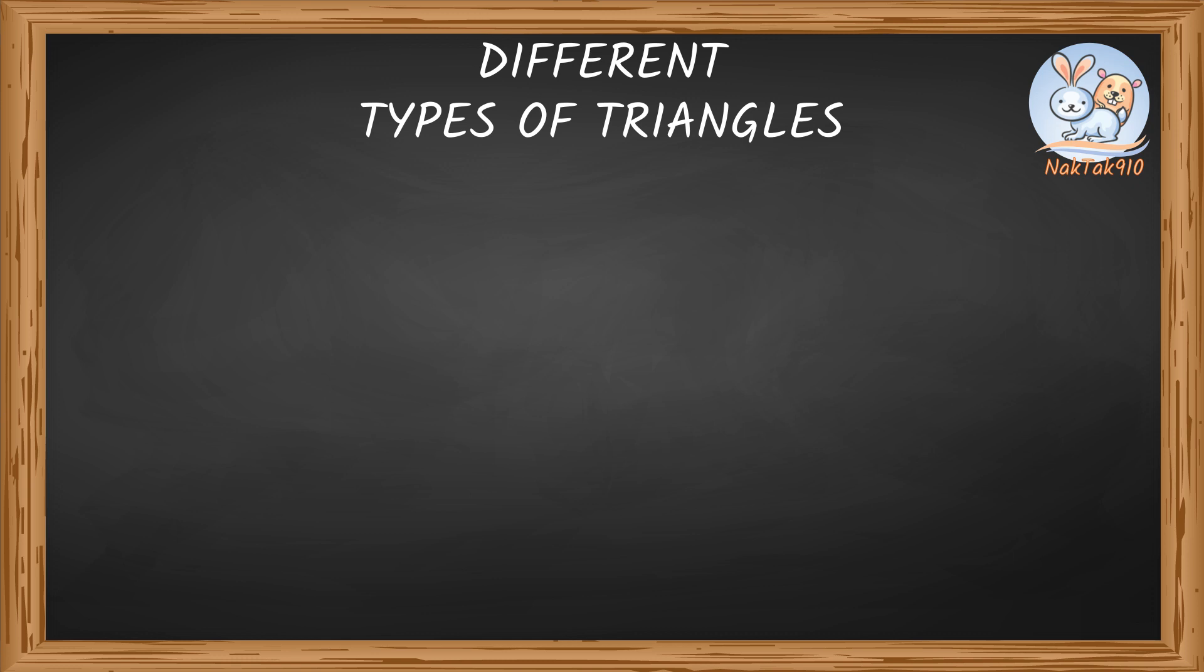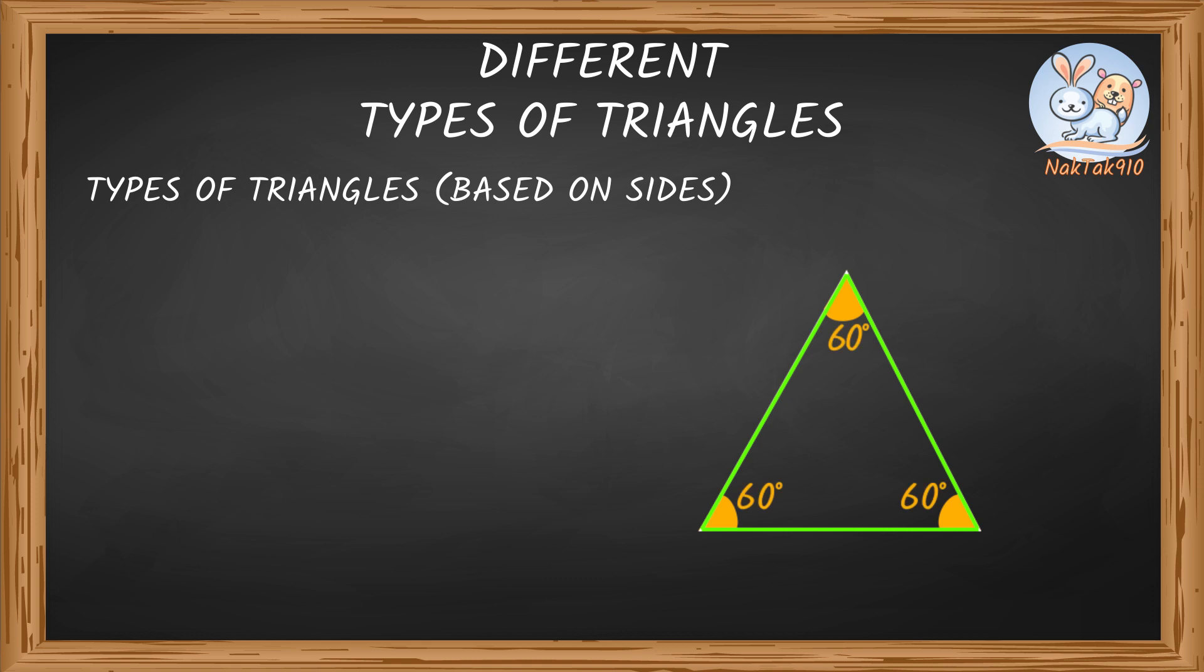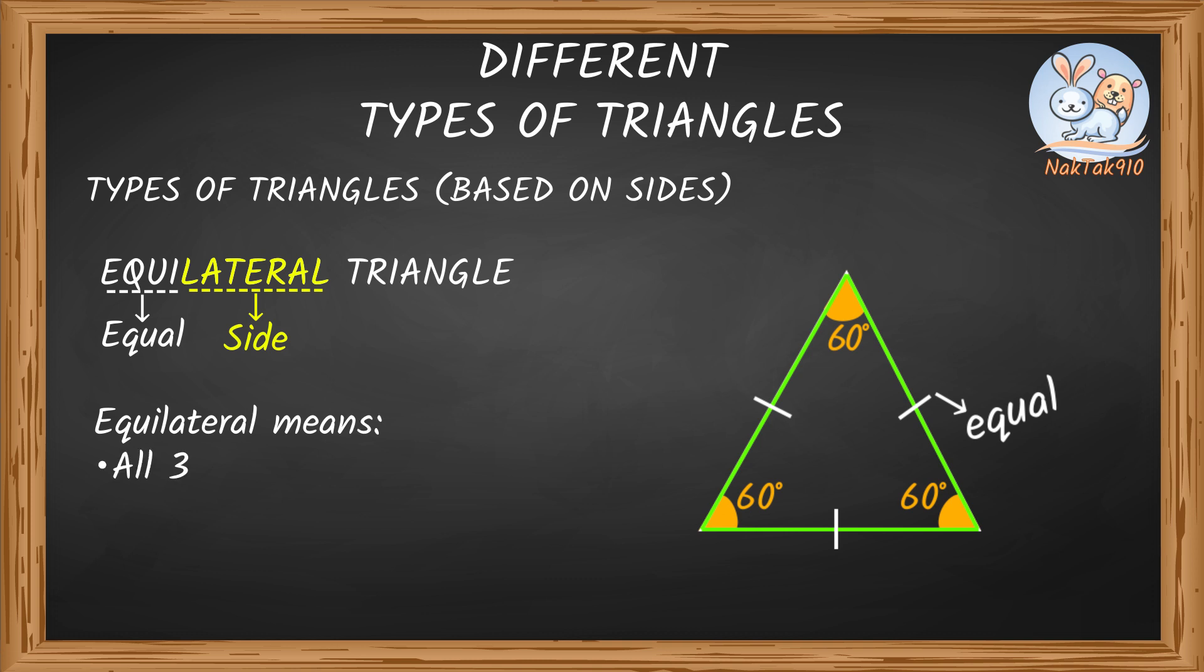So today we're going to learn about different types of triangles based on these sides and angles. Look at this triangle has all three sides and all three angles are also equal, each measuring 60 degrees. This triangle is called an equilateral triangle. These little lines on the sides show they're all equal. The word lateral means side, so equilateral means equal sides. Equilateral triangle means one, all three sides are equal. Two, all three angles are equal. Three, each angle measures 60 degrees.